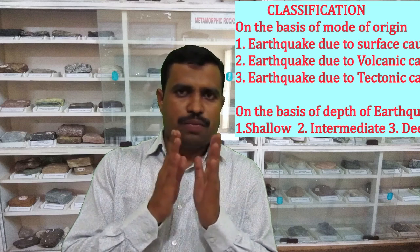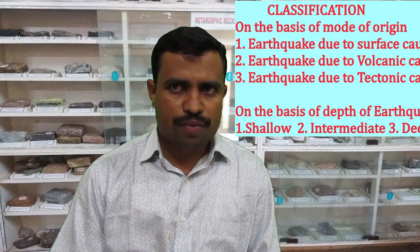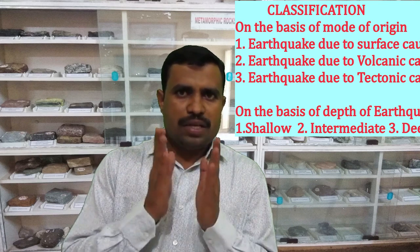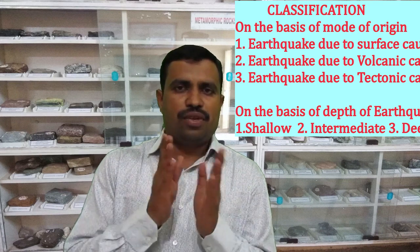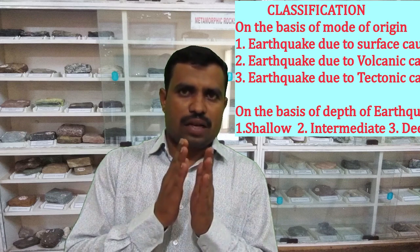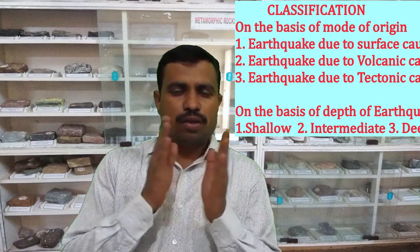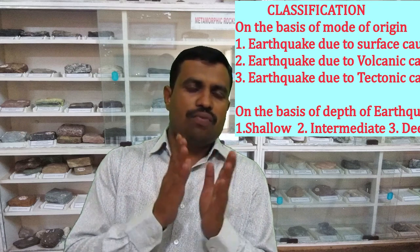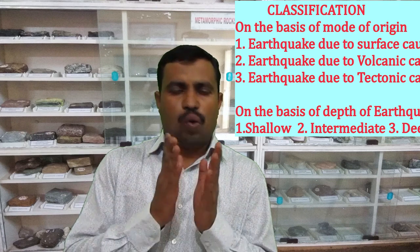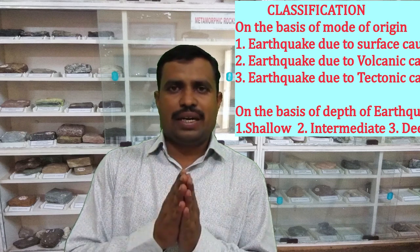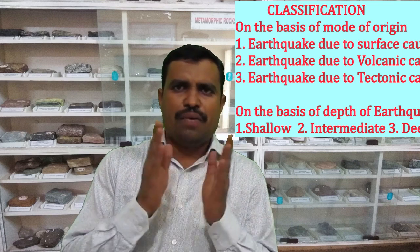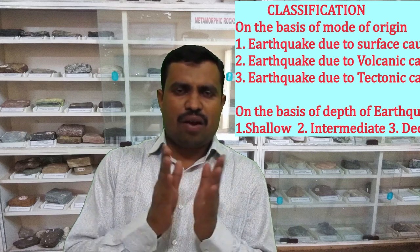There are two types of classification. The first classification is depending upon the mode of origin — how earthquakes originate. On this basis, earthquakes are classified into three types: first, earthquake due to surface causes, such as landslides or roof collapses — these are very minor earthquakes of very low magnitude and not very violent. Second, earthquake due to volcanic cause — when a volcano erupts it causes ground shaking, but these are also very minor earthquakes.